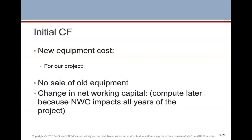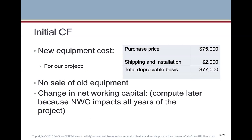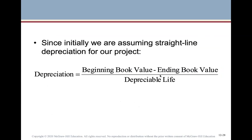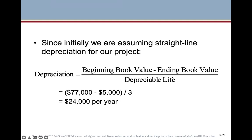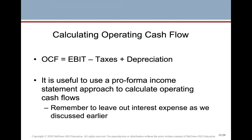For initial cash flows, we have the new equipment cost and no sale of old equipment. We'll compute the change in net working capital later because it impacts all years and is based on sales for the coming year. The purchase price of the new equipment — $75,000 plus $2,000 shipping and installation — gives us a depreciable basis of $77,000. Using straight-line: ($77,000 minus $5,000 ending book value) divided by three years gives us $24,000 depreciation per year.